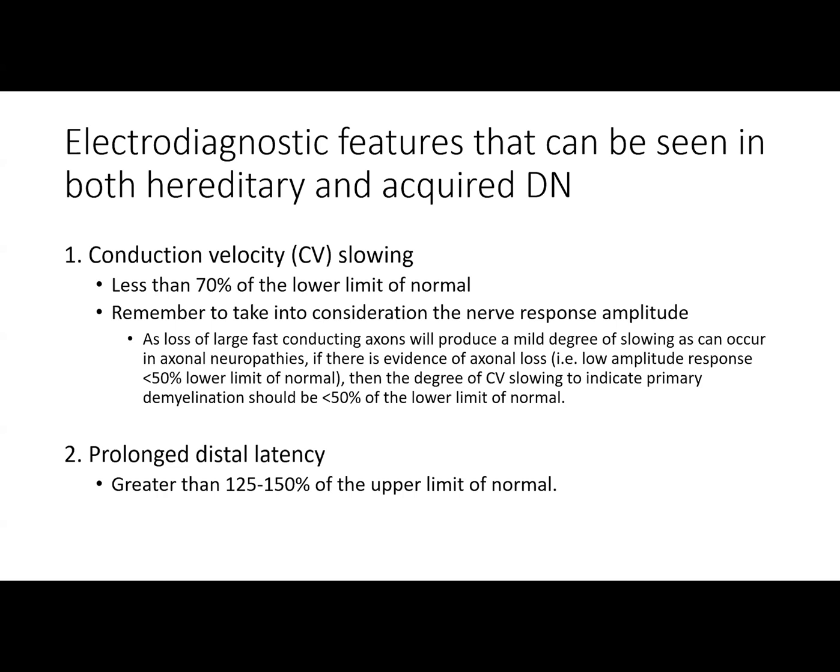The first electrodiagnostic feature is conduction velocity slowing. Slowing less than 70% of the lower limit of normal would be consistent with a demyelinating neuropathy. However, we have to remember to take into consideration the nerve response amplitude when evaluating conduction velocity slowing, as loss of large fast-conducting axons will produce a mild degree of slowing, as can occur in axonal neuropathies. If there is evidence of axonal loss and a low amplitude response less than 50% of the lower limit of normal, then the degree of conduction velocity slowing to indicate primary demyelination should be less than 50% of the lower limit of normal.